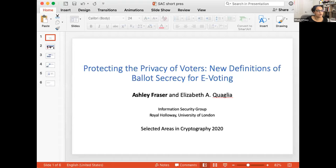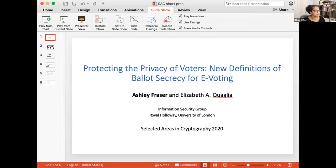I'm assuming it's Ashley. The second paper is Protecting the Privacy of Voters: New Definitions of Ballot Secrecy for E-voting. The paper is authored by Ashley Frazier and Elizabeth Scaglia. Here you go. Thank you. Can you hear me? Yeah, okay, great. Thank you. I will give a brief overview of three new definitions of ballot secrecy that we have defined for this work.